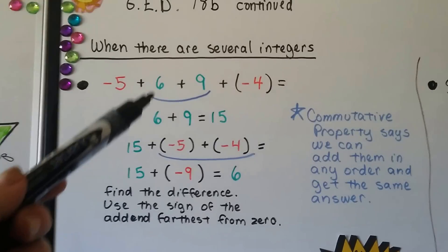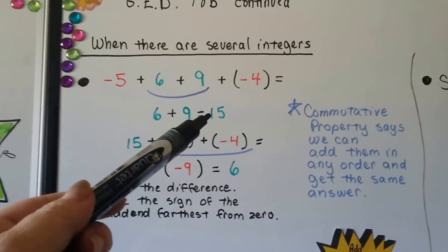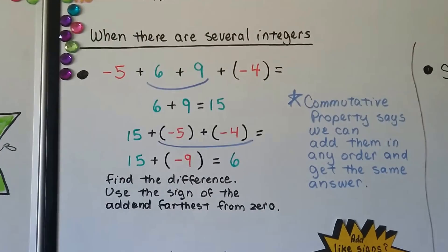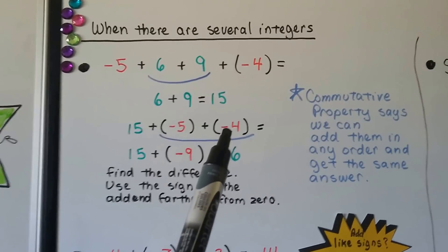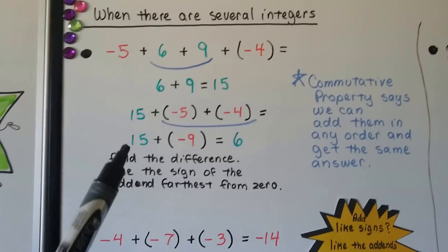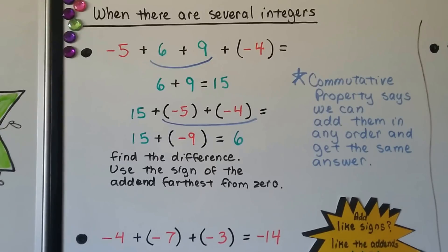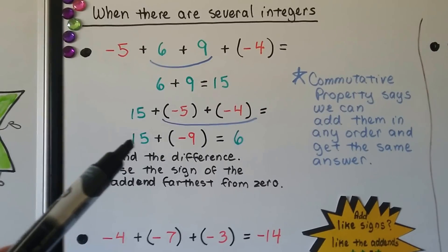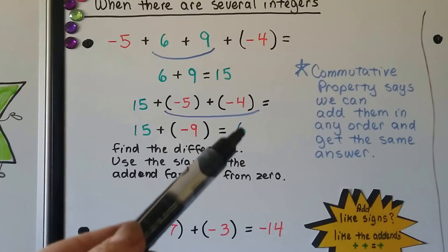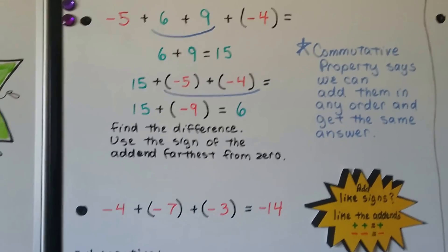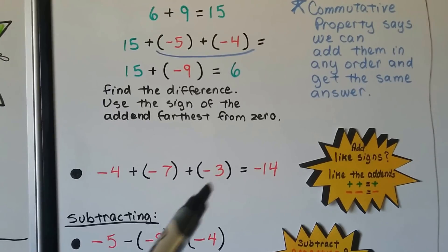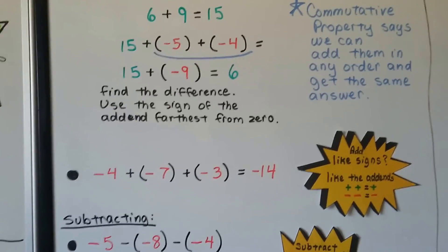We can do that with negatives and positives. We can add the two positives together and get a 15, then add the negatives together — since it's all addition, we can do it in any order. When we add negative 5 and negative 4, they have like signs, so we add them and take their sign: that's negative 9. Now we do positive 15 plus negative 9, following the rules for unlike addends. The difference between 15 and 9 is 6, and 15 is farthest from 0 and positive, so the answer is positive 6. With all like signs — negative and negative and negative — we just add them up and use the sign of the addends to get negative 14.